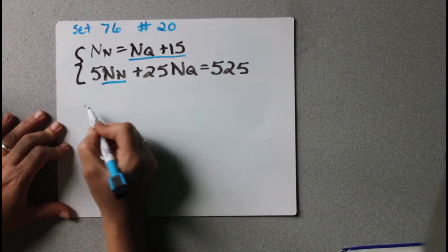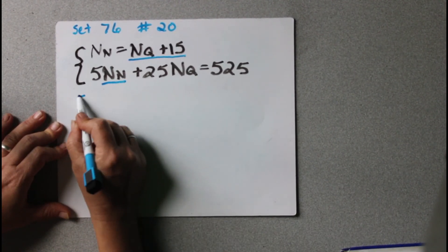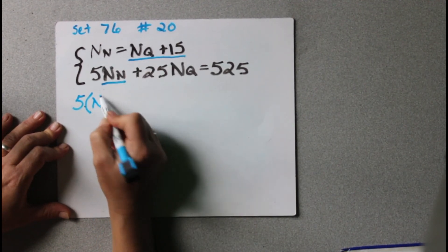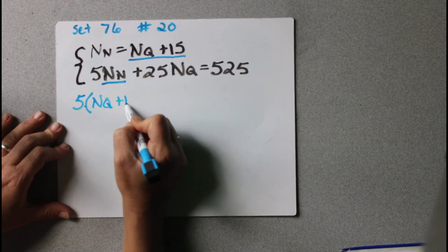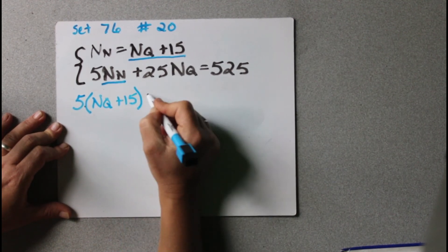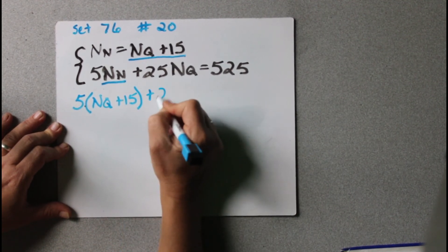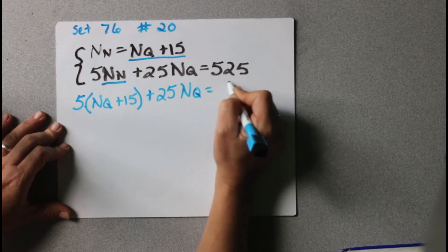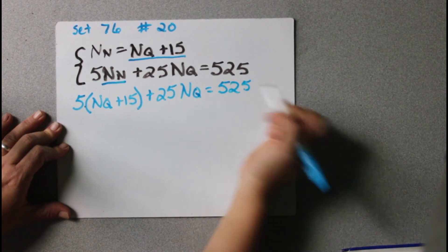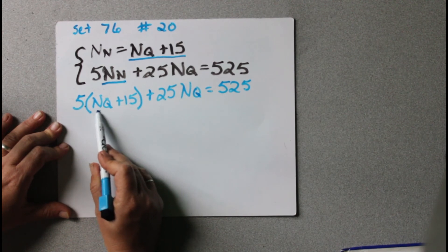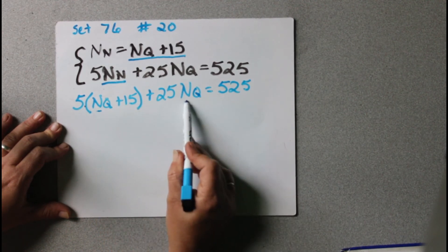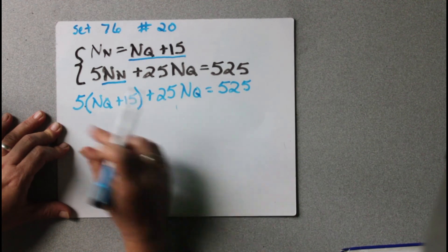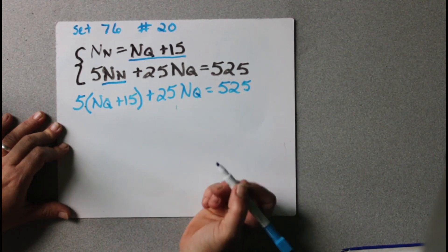So that says 5 times nn. So 5 times the value of nn is nq plus 15. Then we're going to write the rest of the equation. nq equals 525. Now we only have one variable here, nq. It's in there twice, but it's just the same variable. We don't have nn in there anymore.